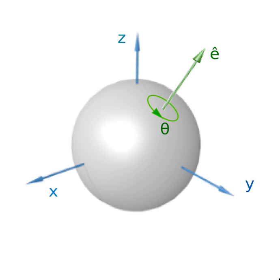One application of rotation is special relativity, which can be considered to operate in a four-dimensional space, spacetime, spanned by three space dimensions and one of time. In special relativity this space is linear and the four-dimensional rotations, called Lorentz transformations, have practical physical interpretations. The Minkowski space is not a metric space, and the term isometry is inapplicable to Lorentz transformations.